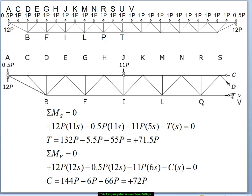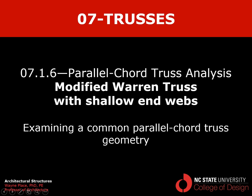The positive result confirms yes, it is tension in the direction shown. A second moment equation, taking moments about the joint where D and T intersect, yields C = 72p — exactly what we were expecting. That ends our video on the analysis of a modified Warren truss with shallow end webs.